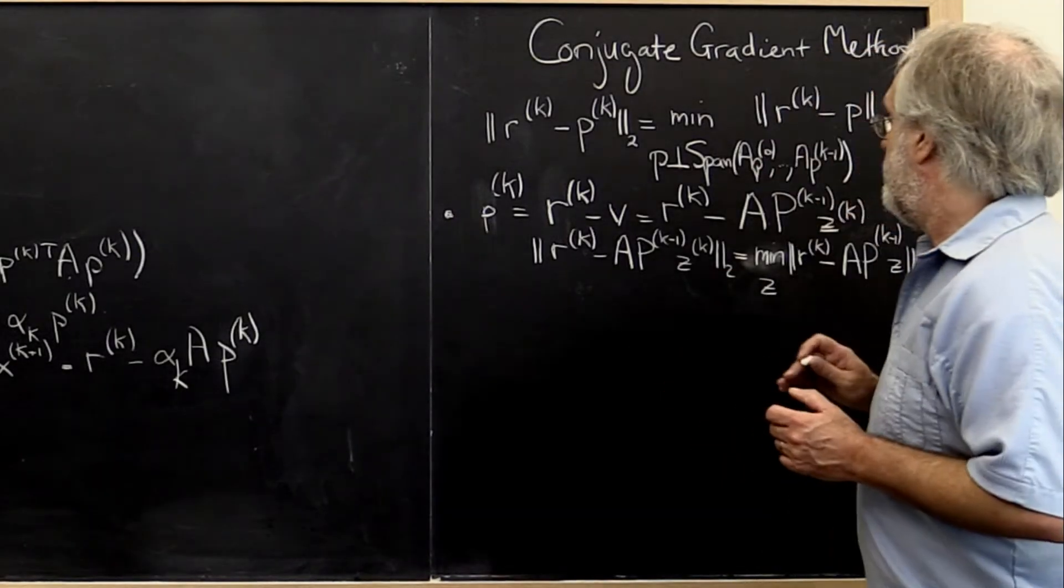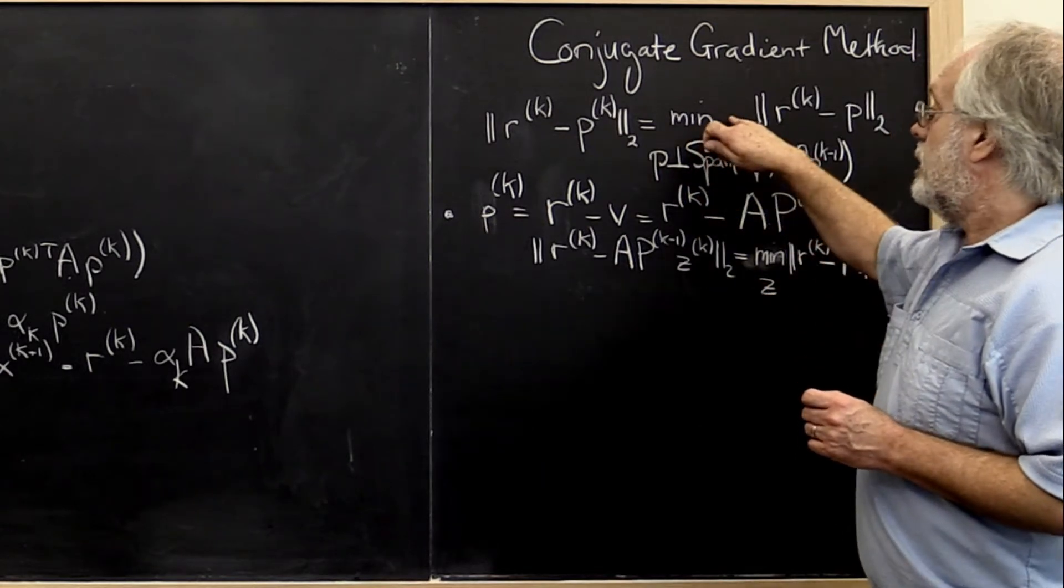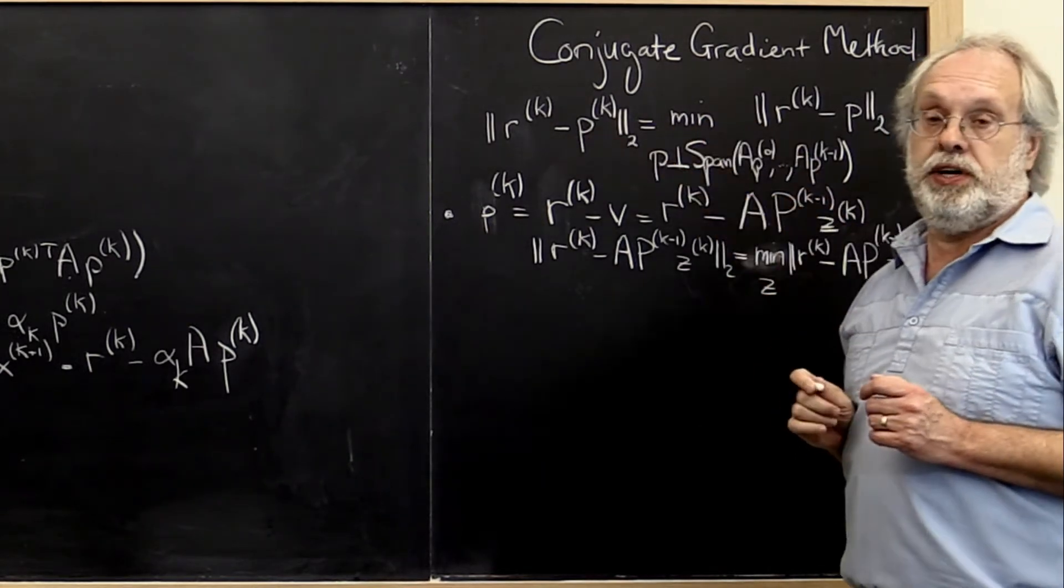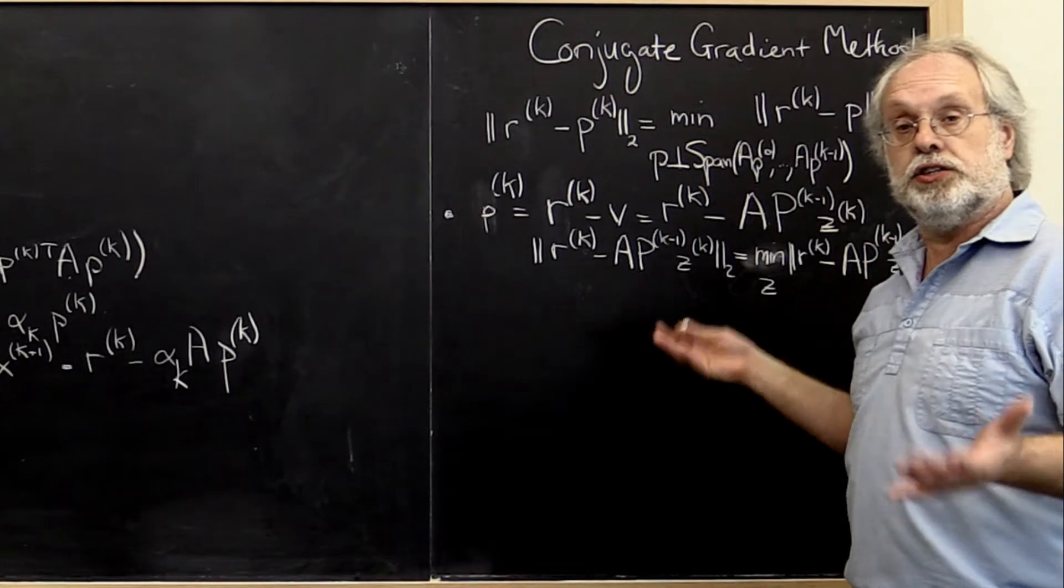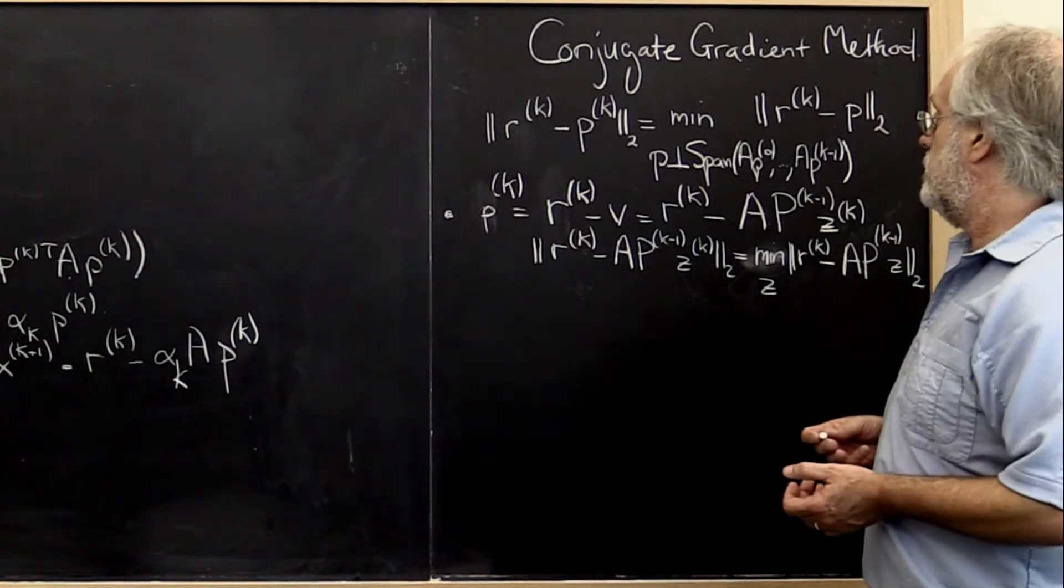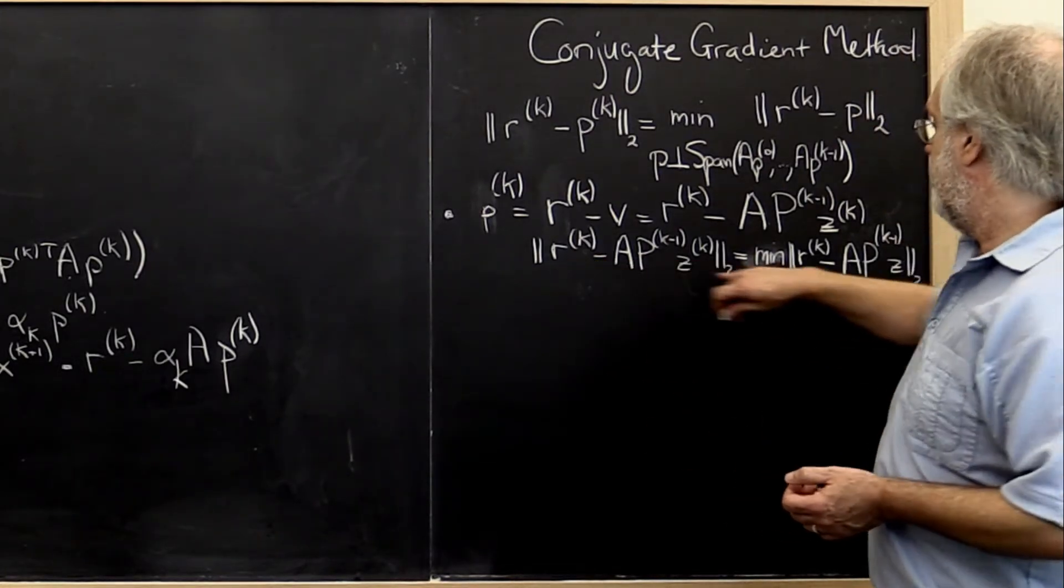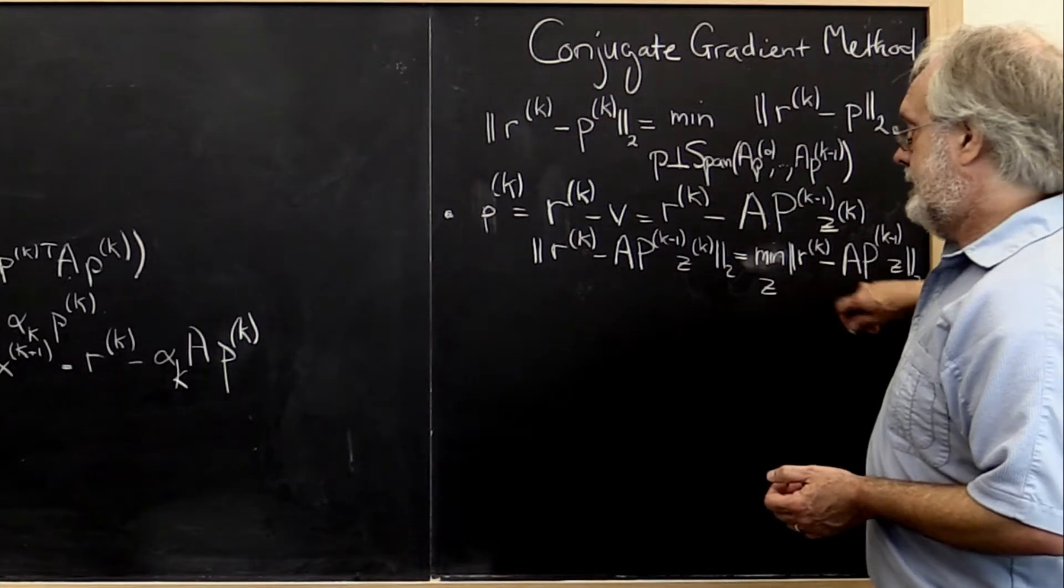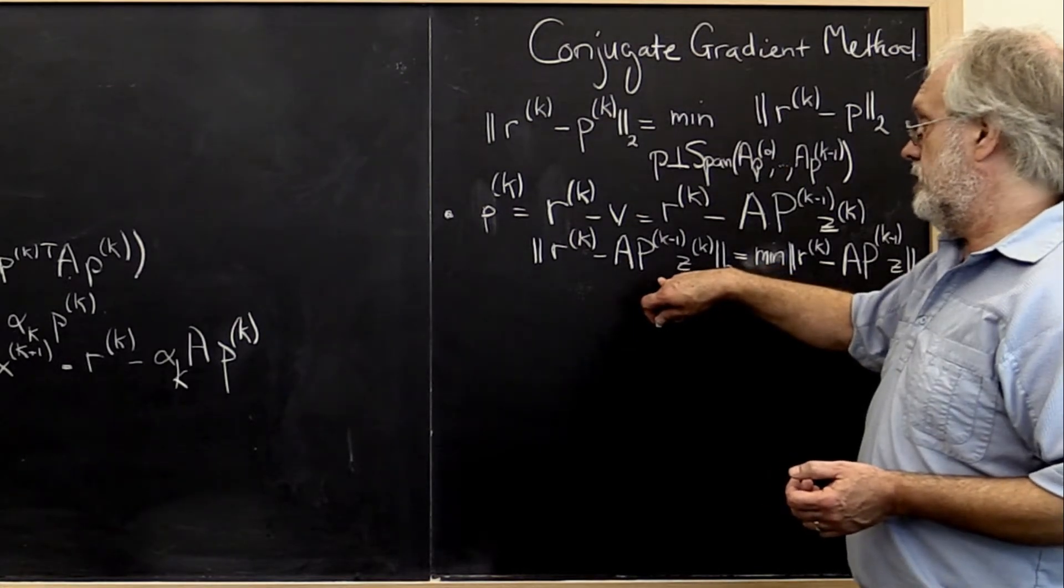So what we have now is not just a characterization of how we should pick a conjugate direction, our next search direction, but actually a formulation that tells us how to compute it